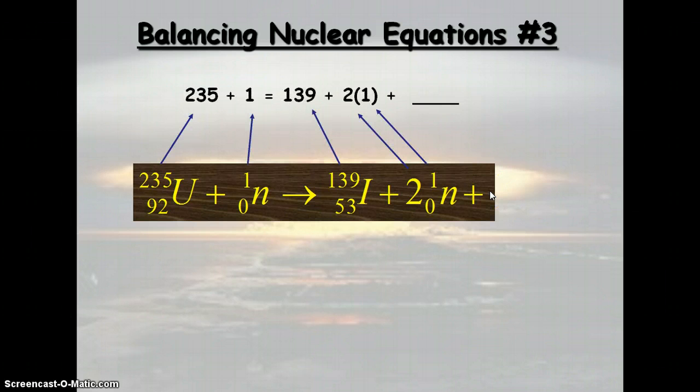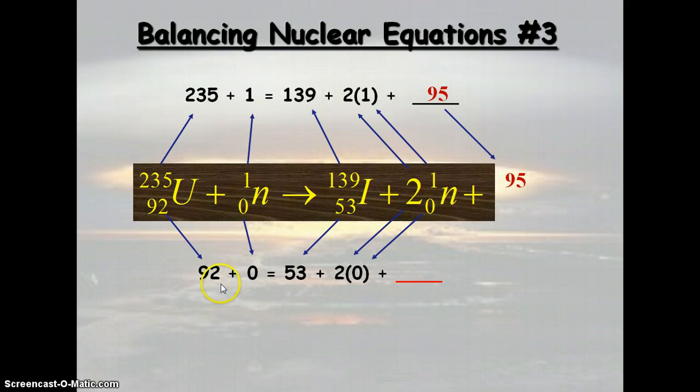We've got 235 plus 1 equals 139 plus 2 times 1 plus x. And that x is going to be 95. So our unknown has a mass of 95.